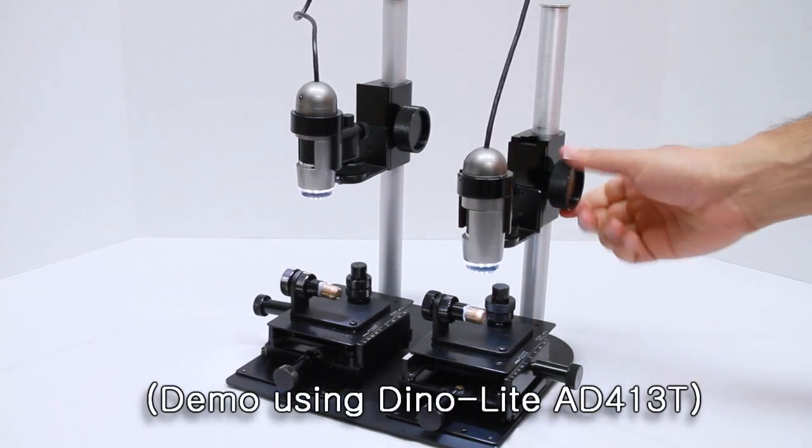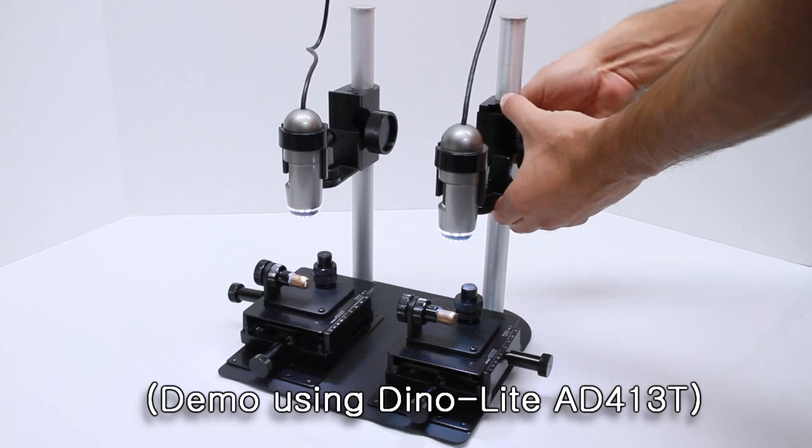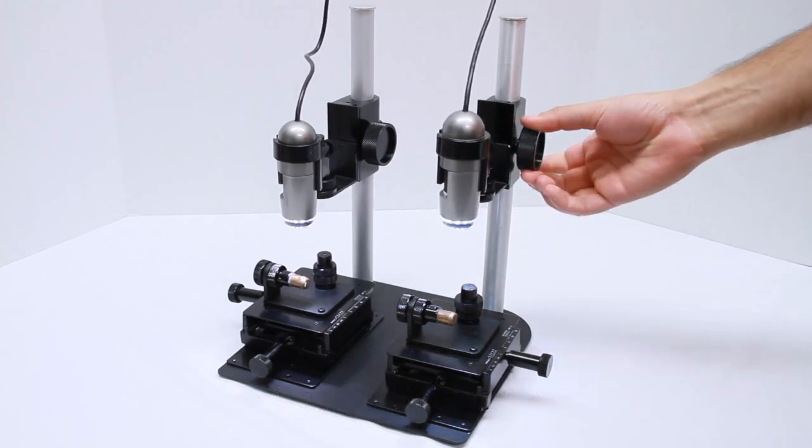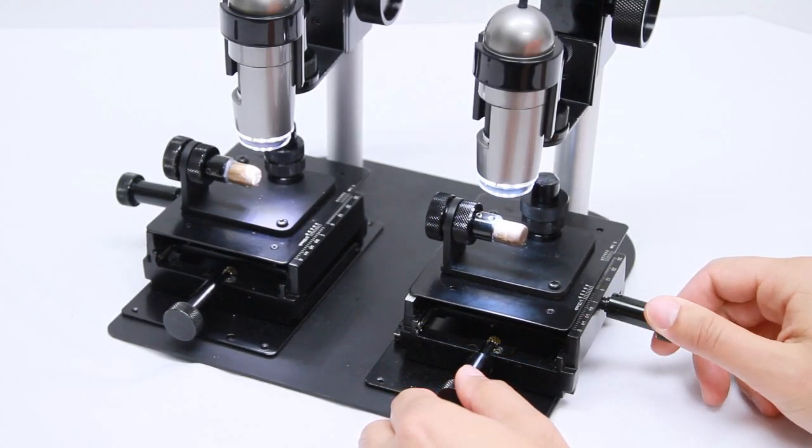The MS45BX-D2 allows for travel up and down and fine adjustment with the dial on each block. Each base also has fine adjustment knobs for X and Y movement.